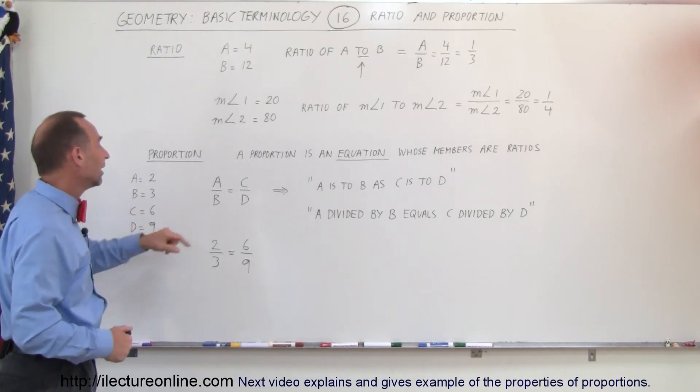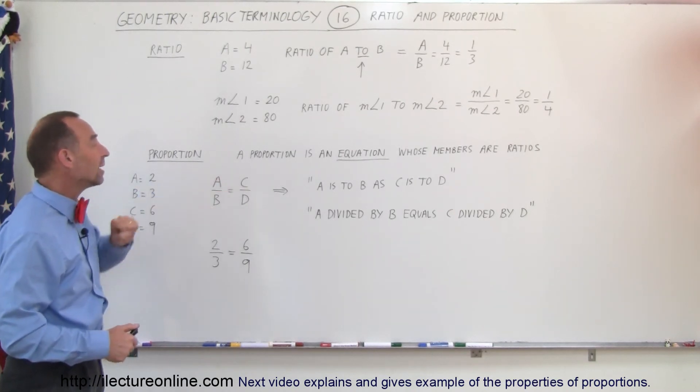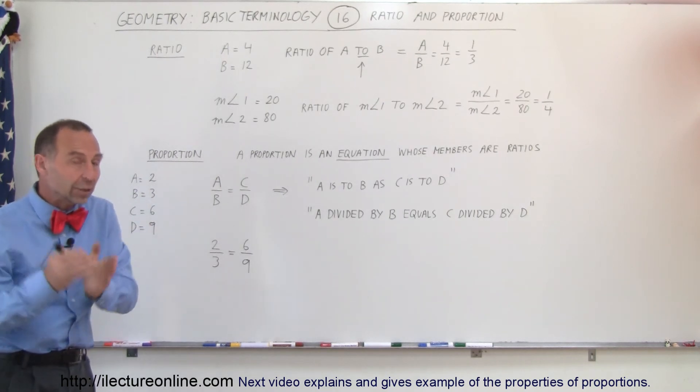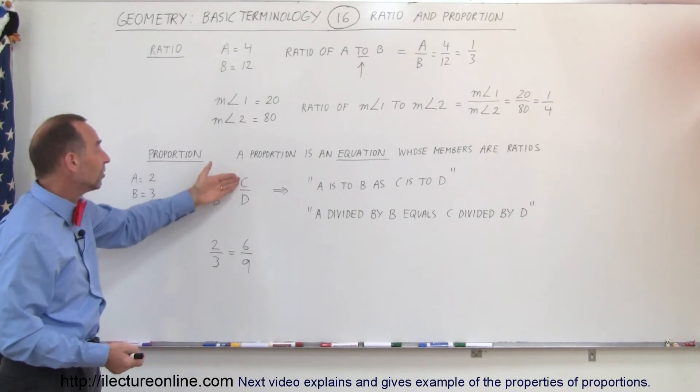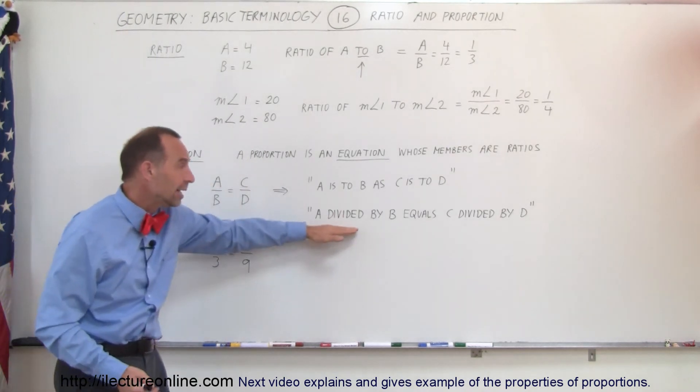If C is 6 and D is 9, then this is the ratio of C to D. And if those two ratios are equal to each other, then we can write it as a proportion. So A divided by B is equal to C divided by D. And that's the way we write it here.